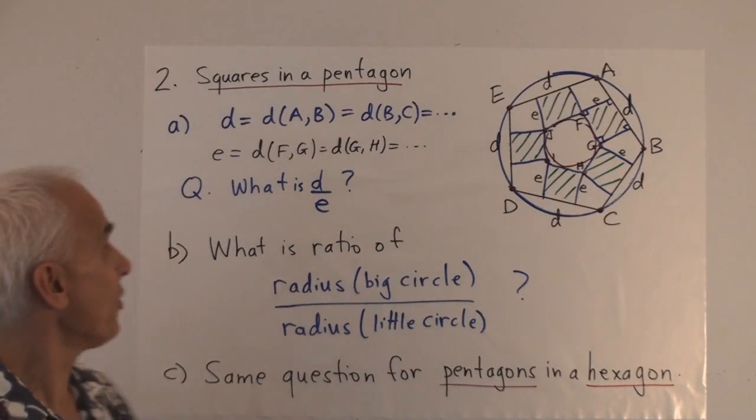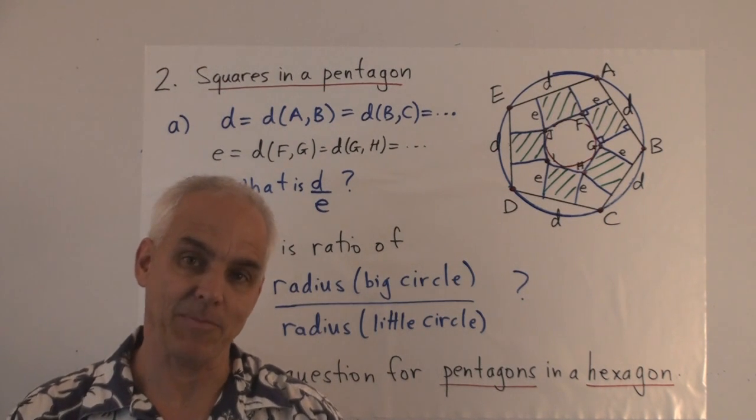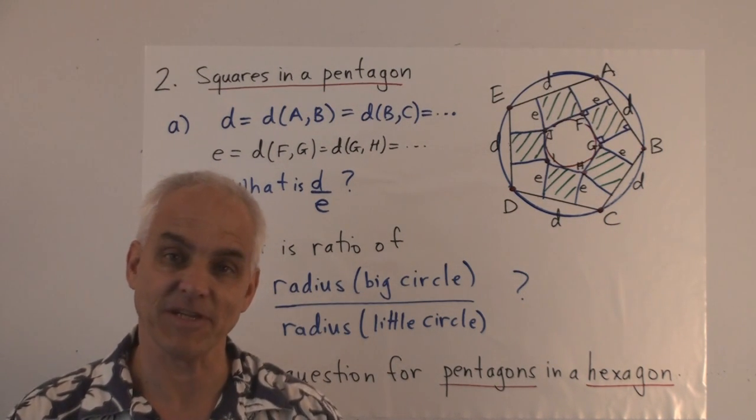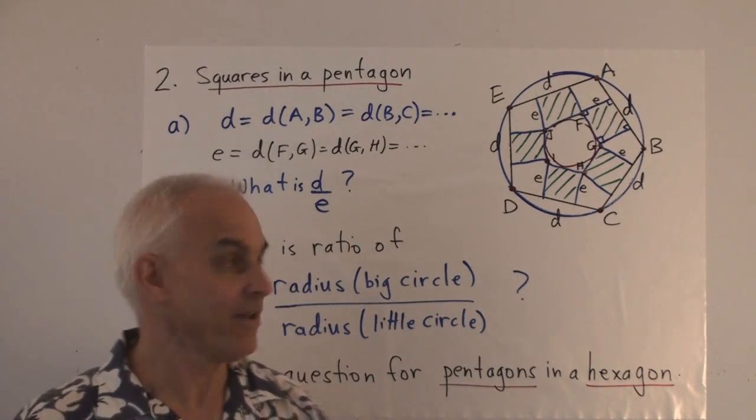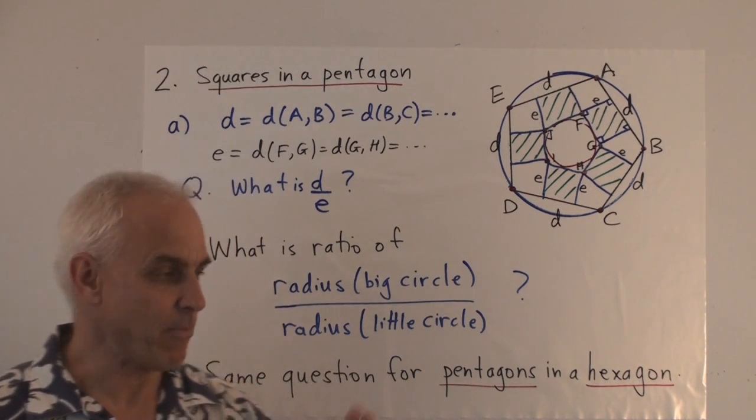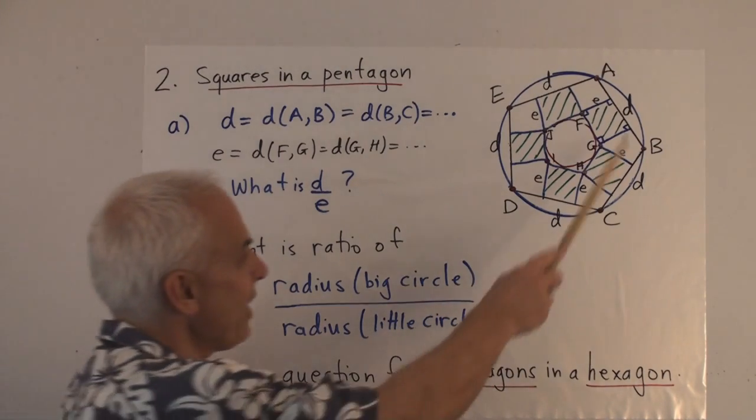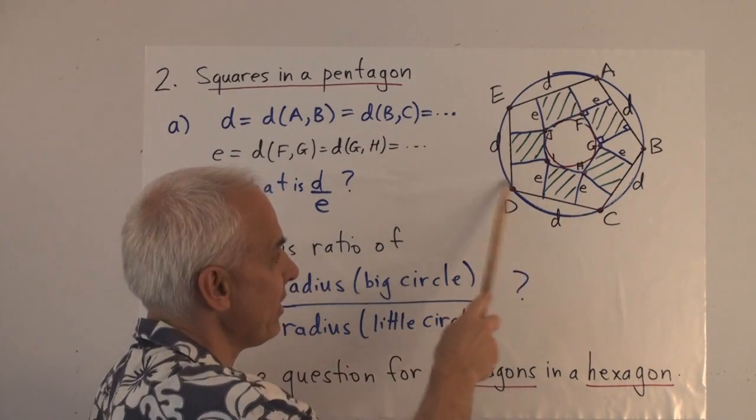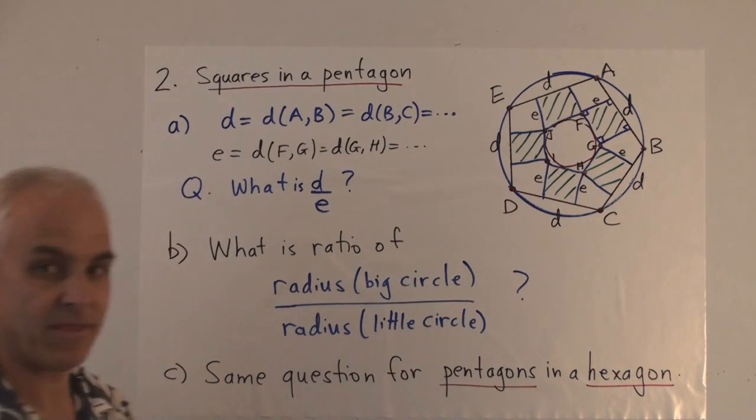This second problem I call squares in a pentagon. And it was inspired by a beautiful mosque that I visited once in Malaysia, that had a beautiful Islamic pattern on it, of which this is a simplified version. I might talk about that more complicated situation some other time. So we have a circle, and we have a regular pentagon in the circle, A, B, C, D, E. So each side is of length D, another distance.